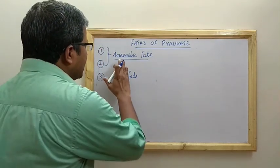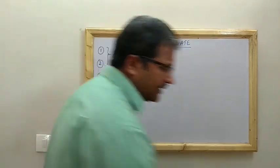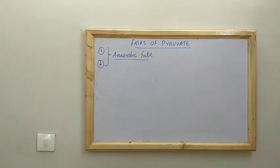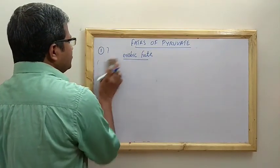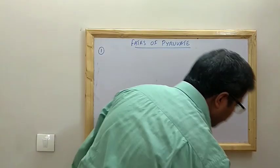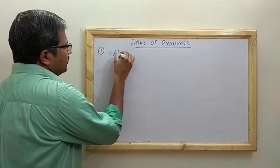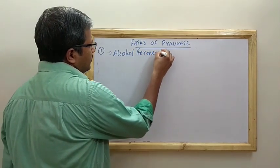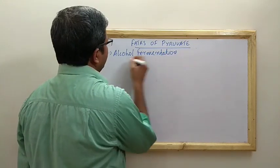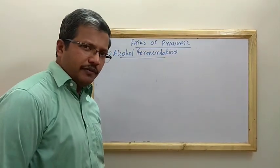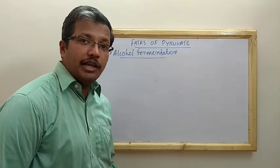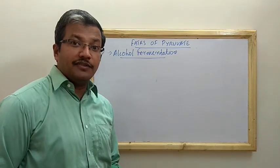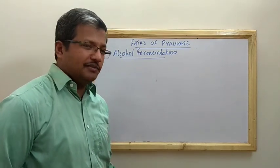Let us see the anaerobic fates first. The first one is anaerobic fermentation, or alcohol fermentation. After this we are going to understand how alcohol can be made and how it can be utilized for scientific purposes like sanitization and disinfection.